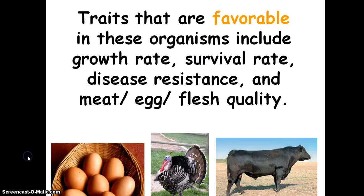All of these vegetables pictured have been bred for particular qualities. Traits that are favorable include growth rate, survival rate, disease resistance, and meat, egg, or flesh quantity. We want eggs to be larger and last a long time, turkeys to have a lot of meat, and cattle to have a lot of meat — we want organisms to have particular characteristics, and we decide what is favorable. That concludes our talk about natural selection — please get your notes copied and placed into your journal.